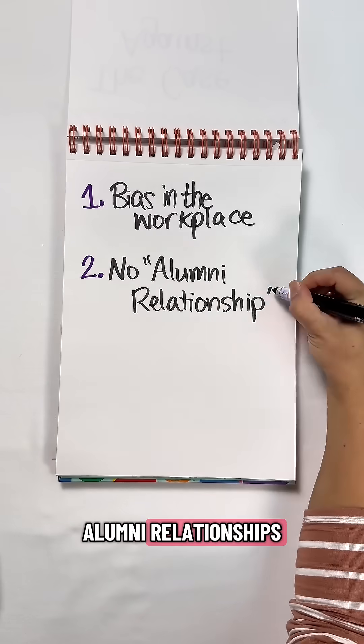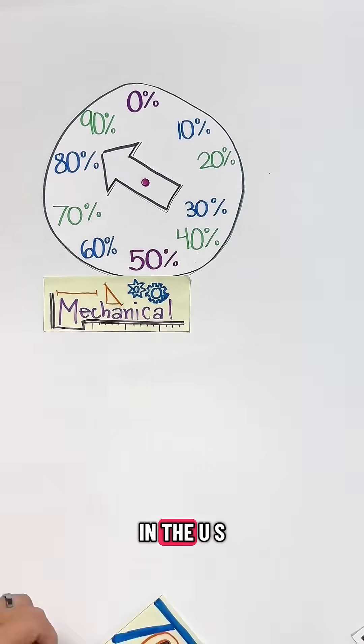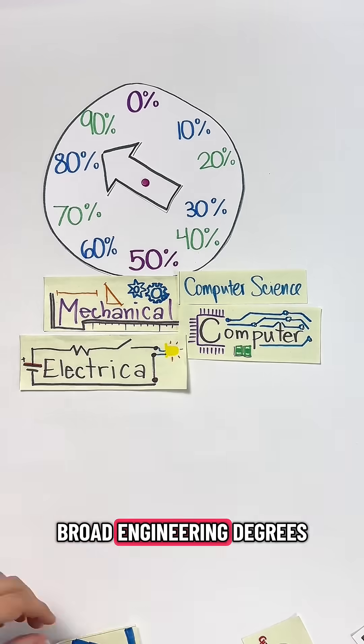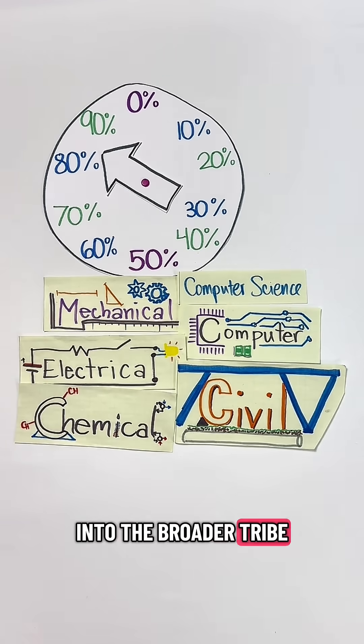Number two, no alumni relationships. Since 84% of all engineers graduating in the U.S. studied just six broad engineering degrees, you're already facing an uphill battle to be accepted into the broader tribe.